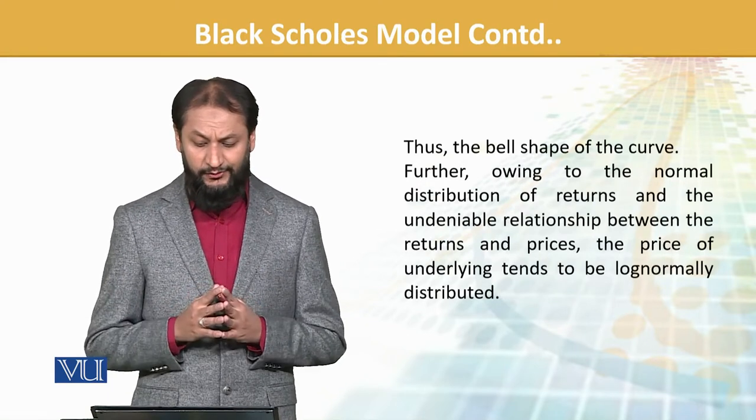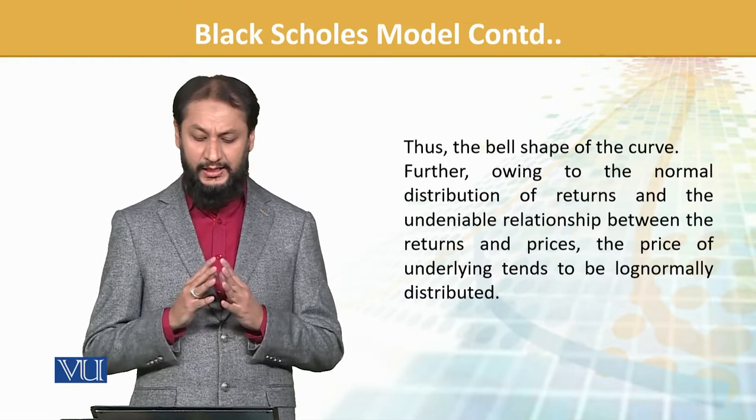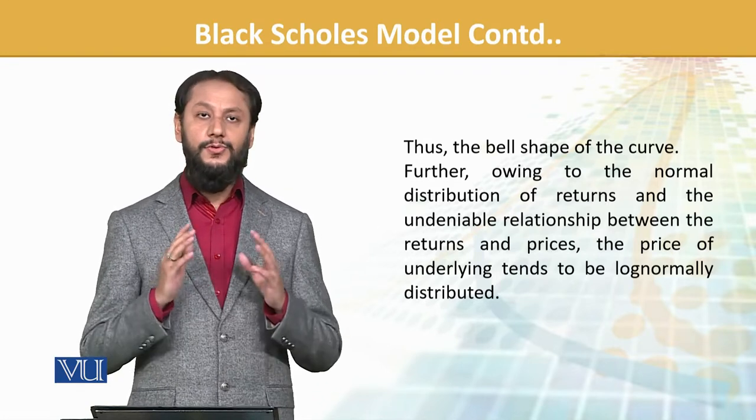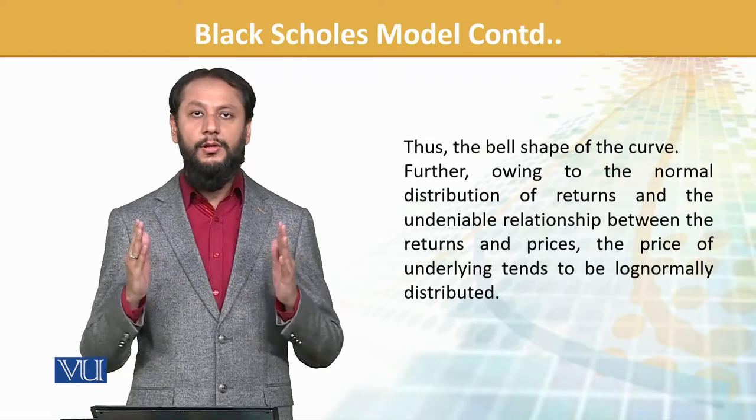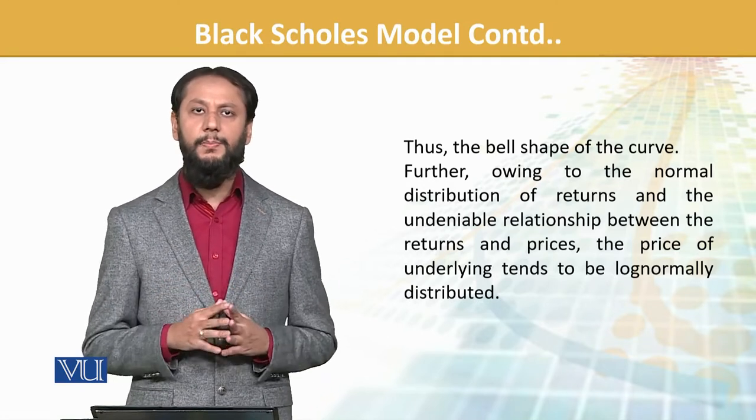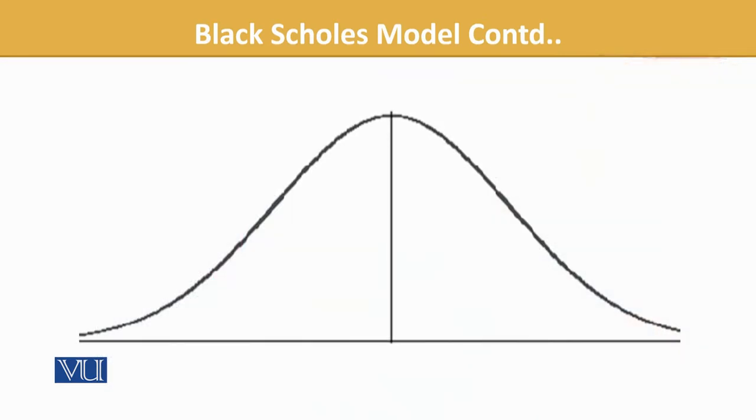Thus bell shape of the curve. Further going to the normal distribution, there's an undeniable relationship between return and price. The price of underlying tends to be log-normally distributed. Distribution part is close to center. Graphically if we look at it, the major observations are close to center and the tails are very minute. The major part, that is outcome return, stays close to the center part. So this is normal distribution curve. I think you can recall that.